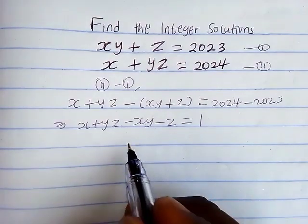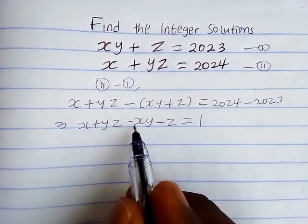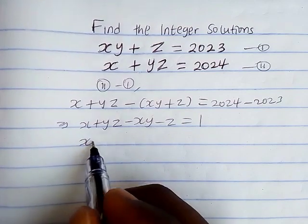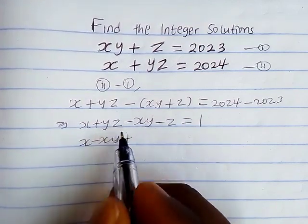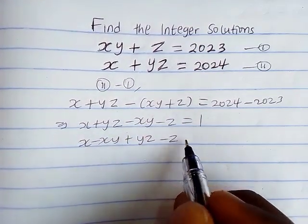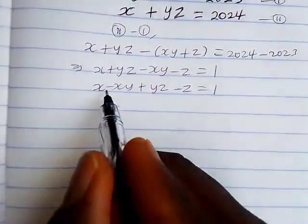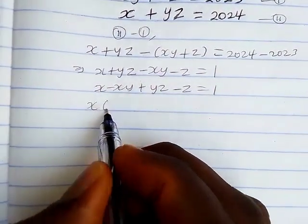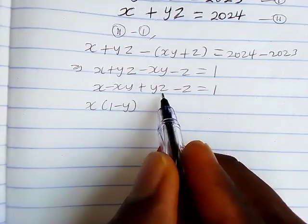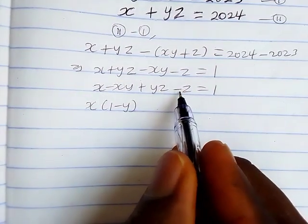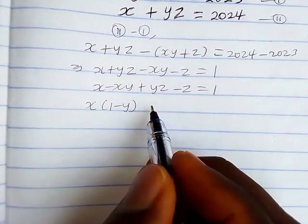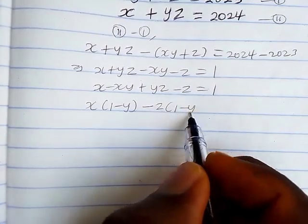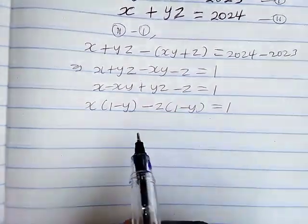Now let's combine the common terms. We have x here and x here, so we have x minus xy plus y minus z equals 1. Let's pull out the common factors: x is common, giving x times (1 minus y). For the z terms, let's pull out minus z to make life easier, giving minus z times (1 minus y) equals 1.